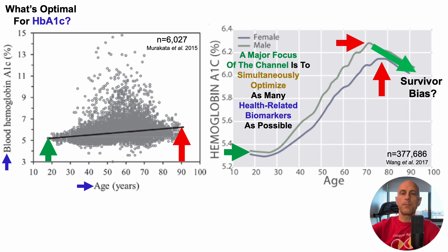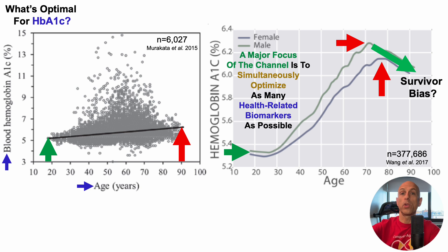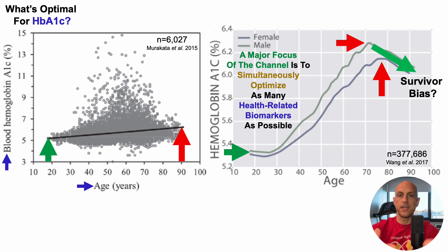I haven't yet seen this in the published literature. I think this is possibly a survivor bias, where people who live to older than 70 or 80 are more likely to have relatively lower HbA1c values. If anyone has come across that story or has more insight, please leave it in the comments and let's share with the community.